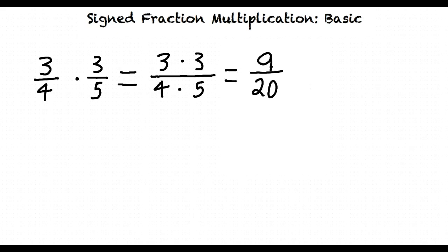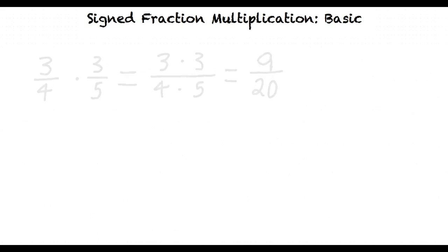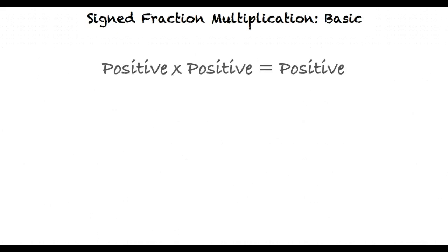What if one of the fractions is negative? The rules for multiplying two fractions are the same as the rules for multiplying two integers. If both of the fractions are positive, or if both of the fractions are negative, then the answer is positive.